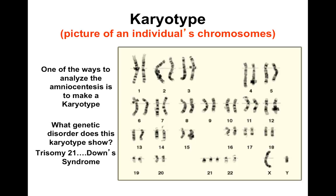Another thing we looked at earlier is something called a karyotype. This gives us a picture of your chromosomes, and this is where it's really easy to see non-disjunction disorders. On this one here, we can see a male that has three copies of the 21st chromosome — so they would have Down syndrome.